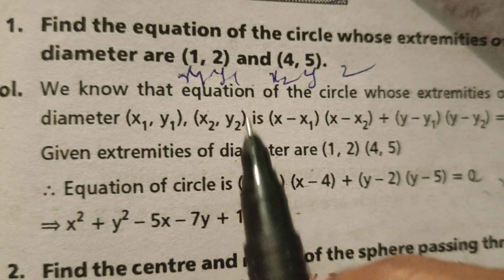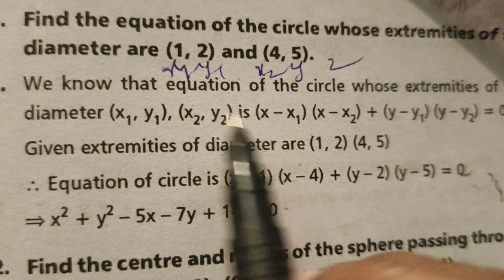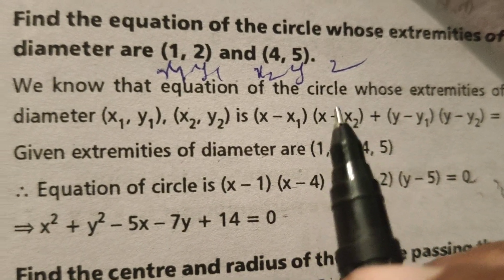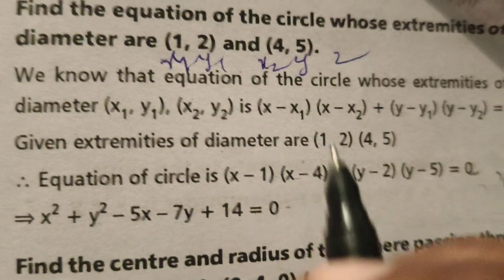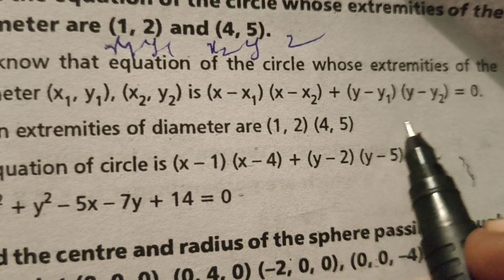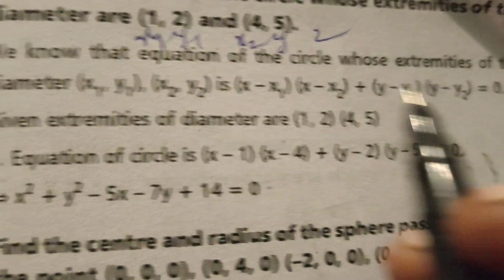x₁, y₁, x₂, y₂ formula means extremities of the two end points of the diameter of circle (x - x₁)(x - x₂) + (y - y₁)(y - y₂) equals to 0.